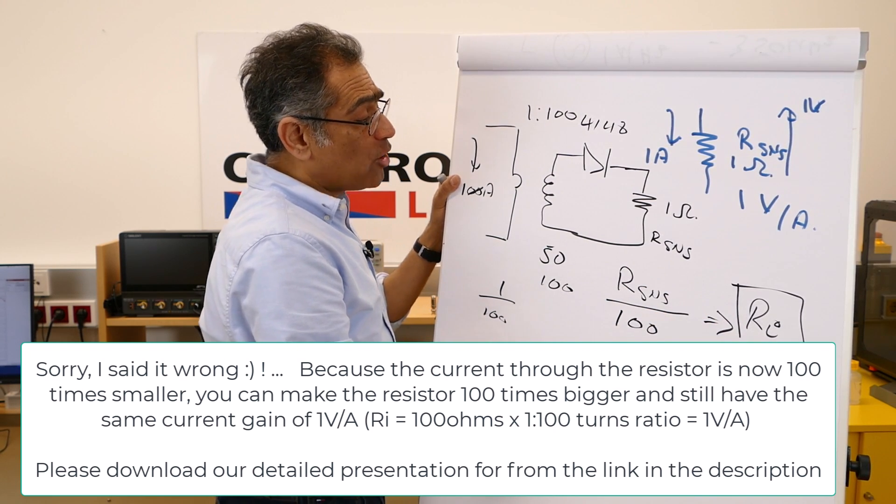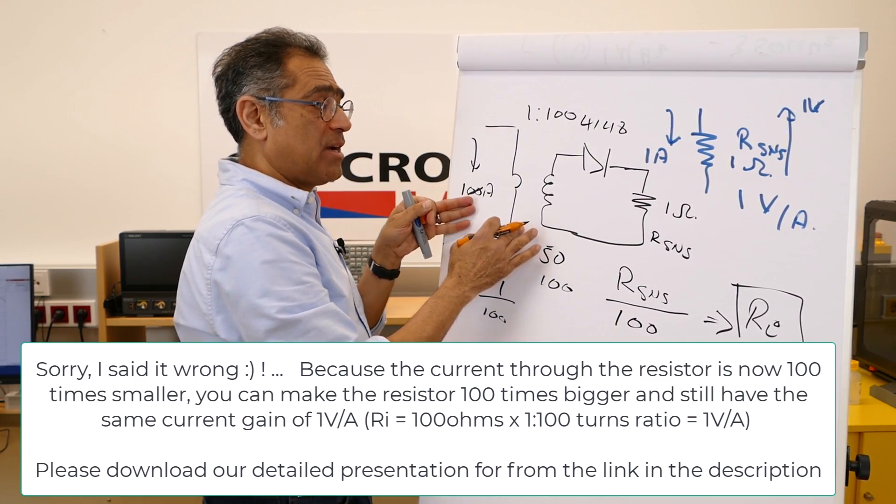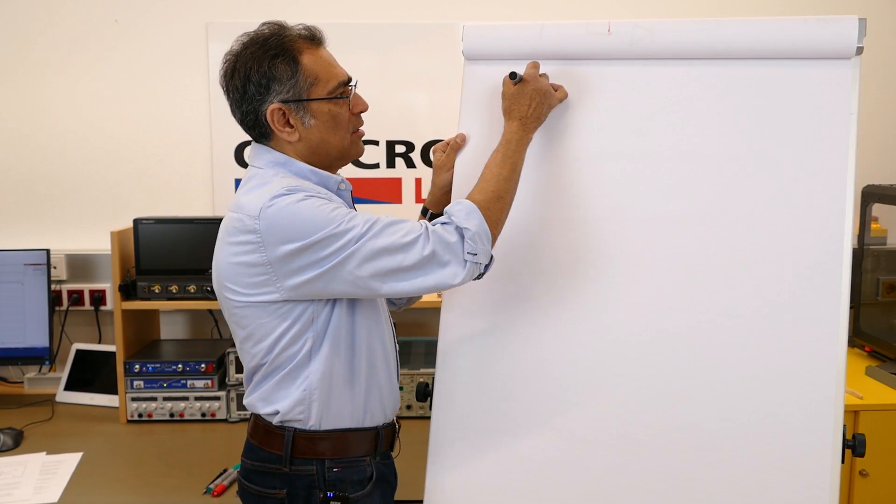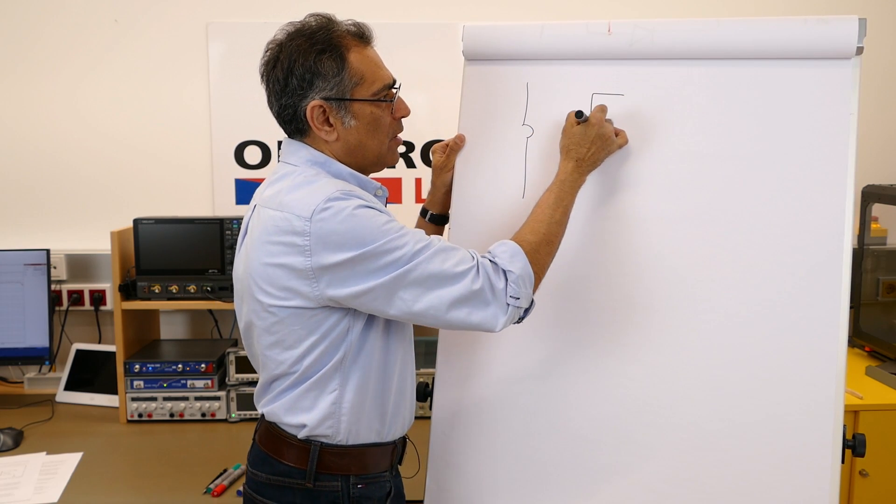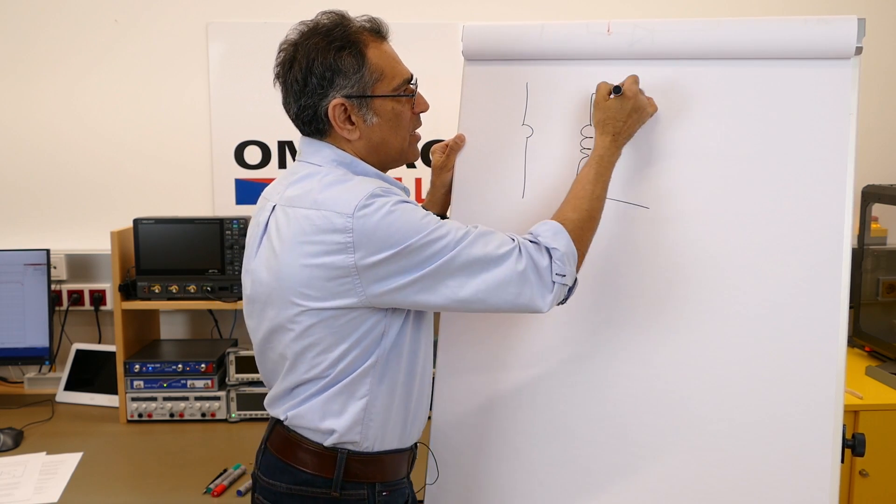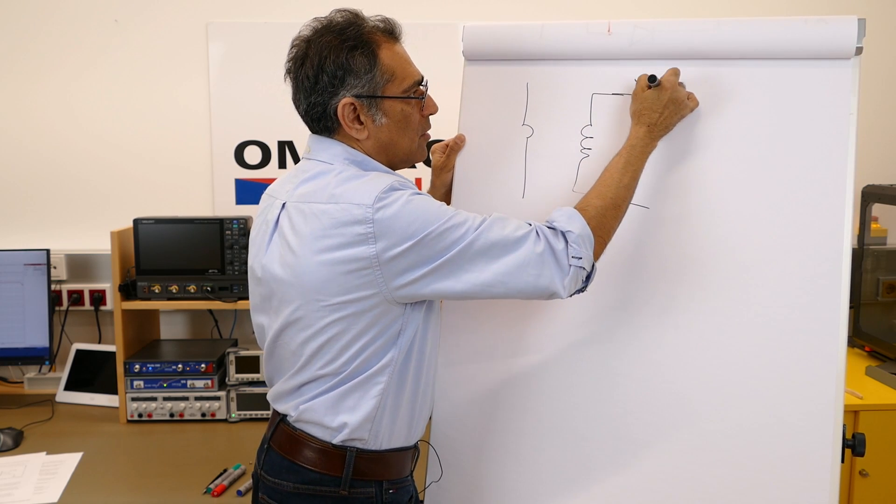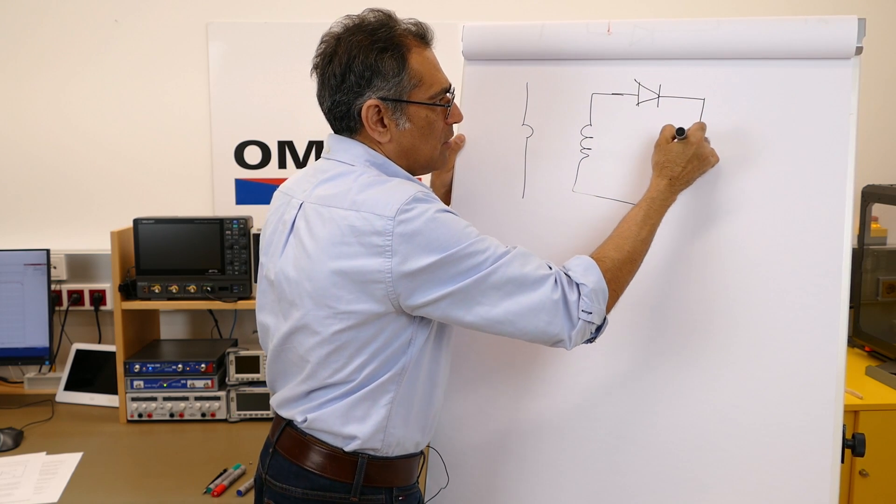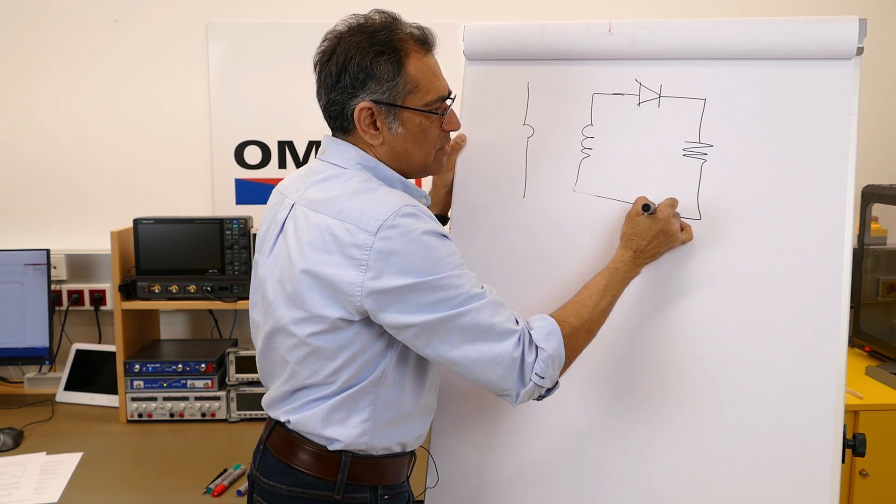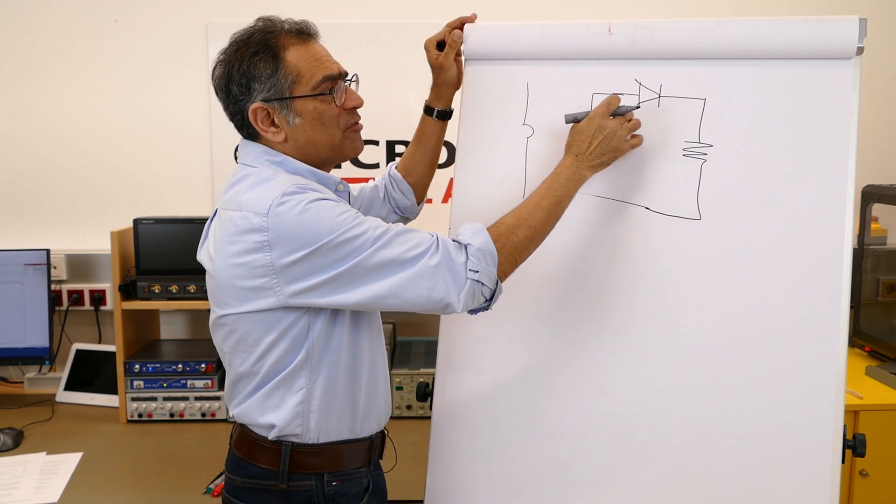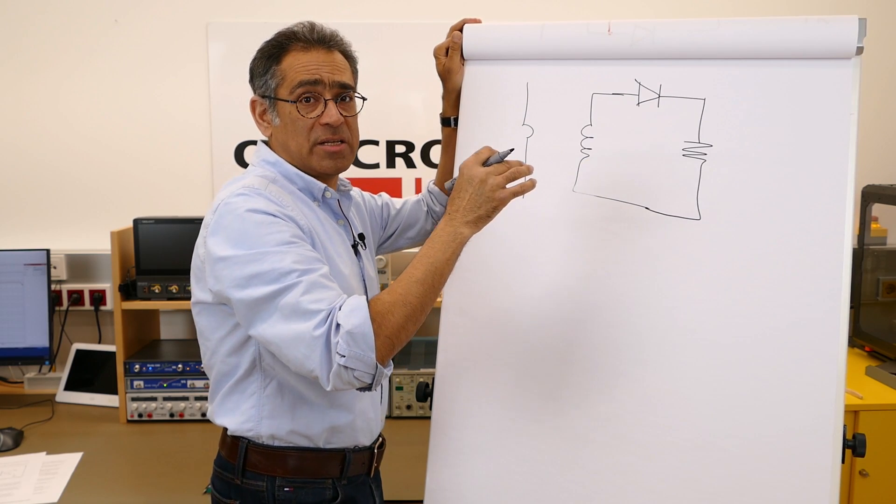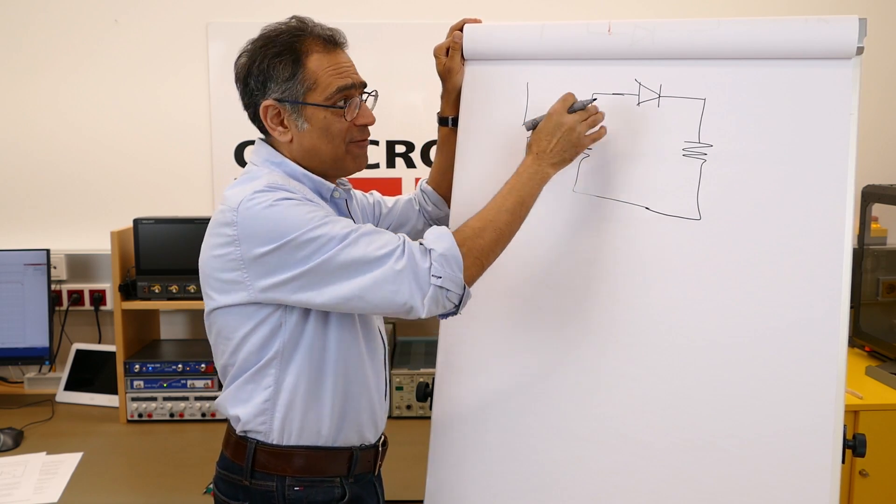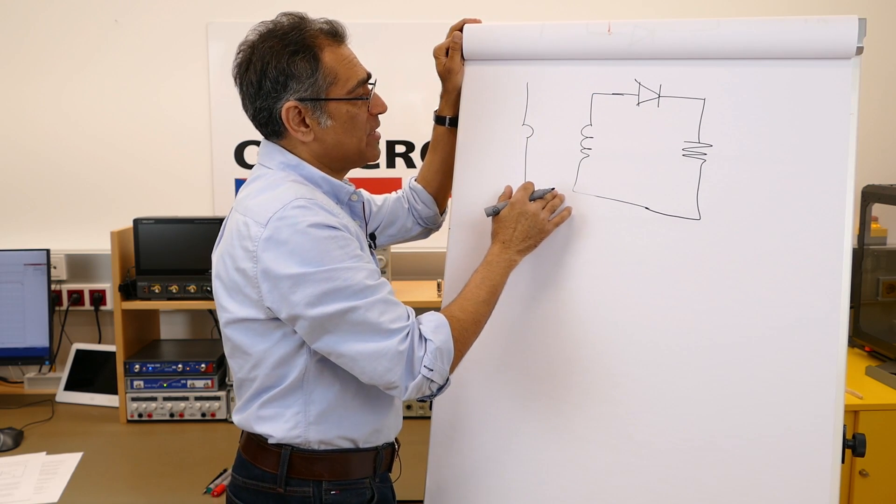So how do we go about designing the circuit? Let us then draw this circuit again. Here you've got your primary, here you've got your secondary. You've got a diode and a burden resistor. The job of the diode to allow the core to reset, there's an excellent paper from TI in the description, so you can have a look at how it operates.